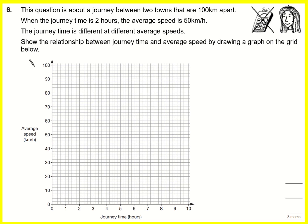So this question is about a journey between two towns that are 100 kilometers apart. So the distance is always equal to 100. And then when the journey time is two hours, the average speed is 50. So that makes sense, doesn't it? Because speed times time is equal to distance, and 50 times two is equal to 100. So this is a pair of solutions, essentially, to this equation.